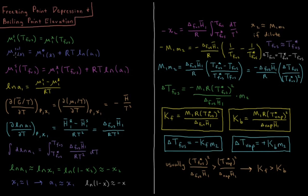The chemical potential of component 1 in a liquid solution is equal to the chemical potential of the pure liquid plus the gas constant times temperature times the natural log of the activity of our solvent. So the temperature at which melting occurs is where the chemical potential of the solid of the solvent equals the chemical potential of the liquid of the solvent plus RT times the natural log of the activity of the solvent. Therefore, the natural log of the activity equals the chemical potential of the solid minus the chemical potential of the liquid, divided by RT.